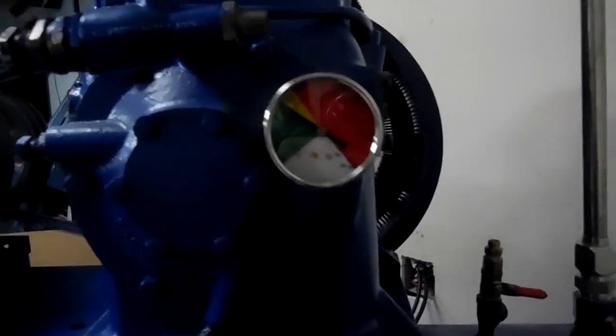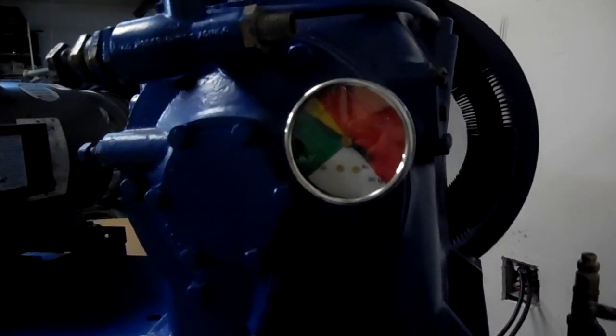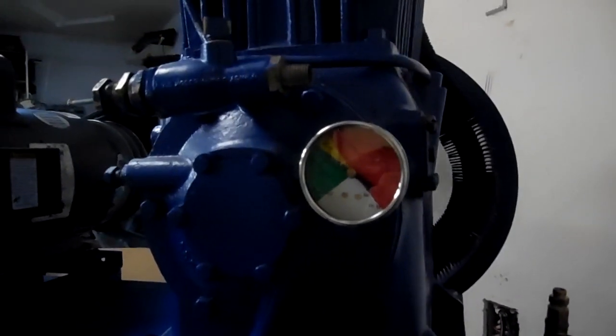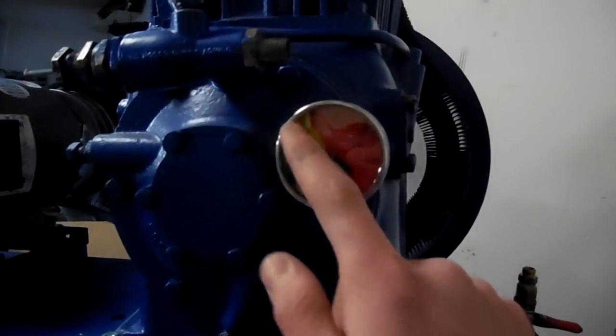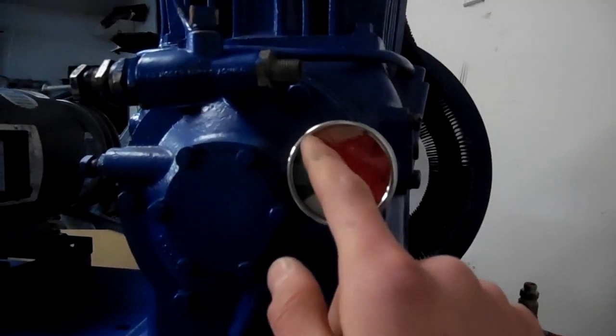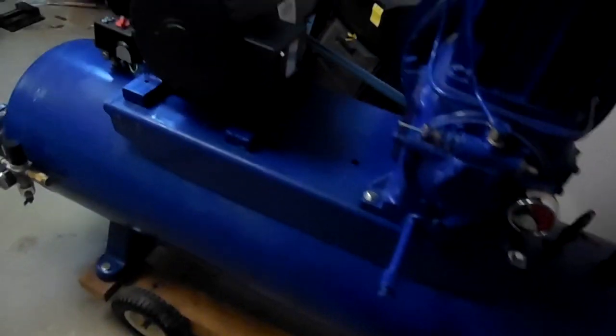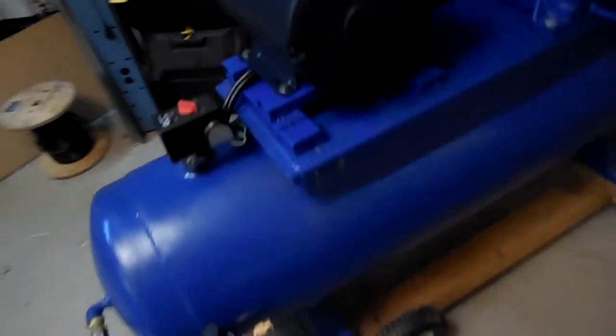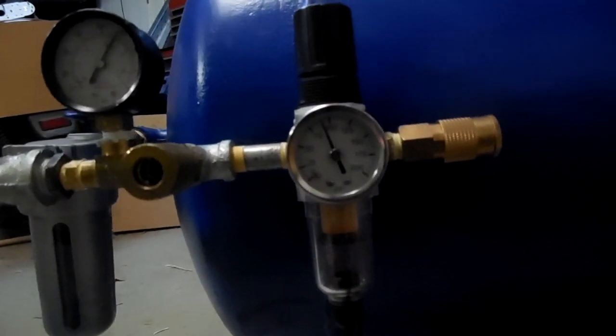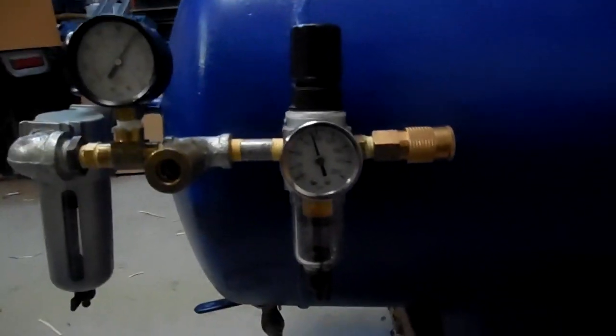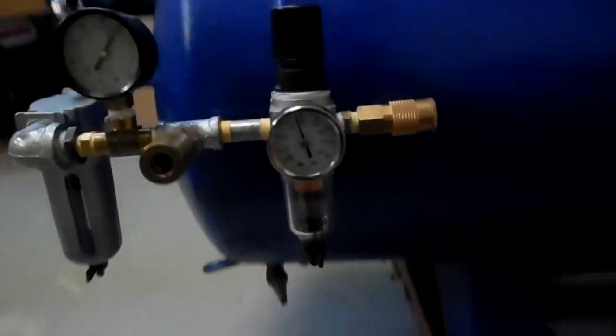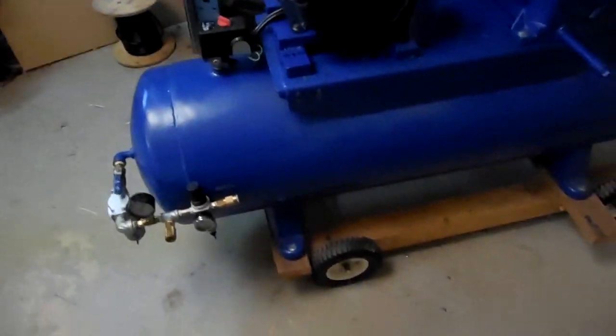You can see the oil pressure gauge has come up to the 18 PSI where it's supposed to be. I like this gauge because it's green, and then yellow, and then red. We are at 4 minutes here and we're up at 90 PSI, so we've got about 30 pounds more to go.